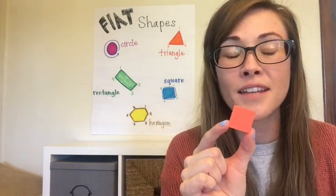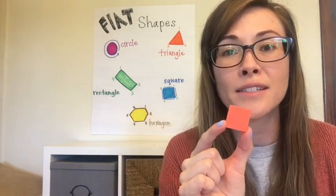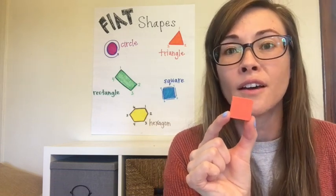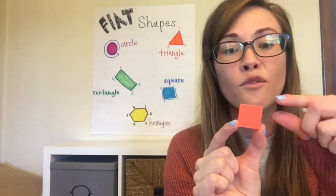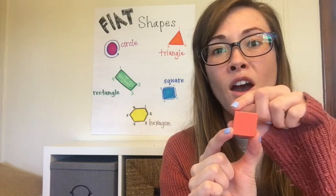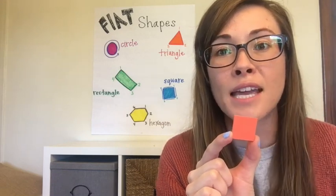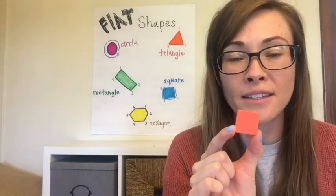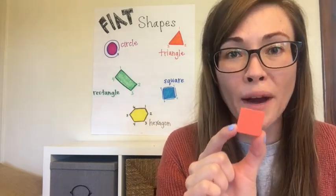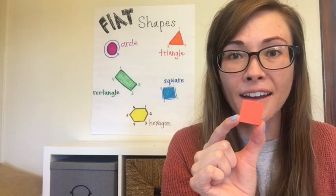This next shape is a special type of rectangle. All four sides are the same length. This is a square.